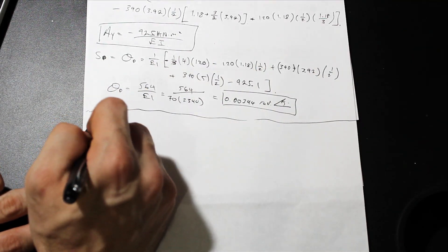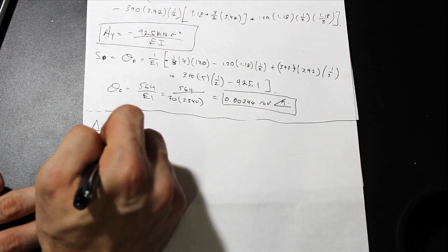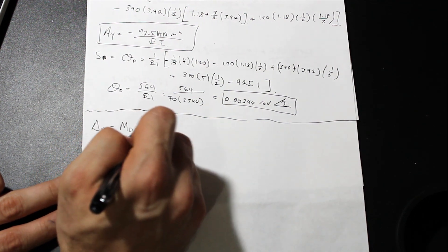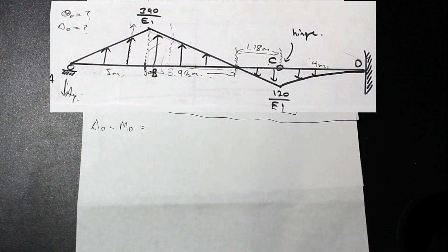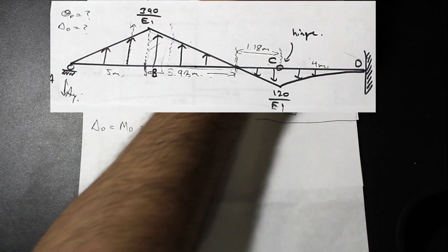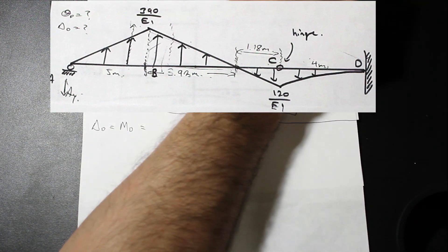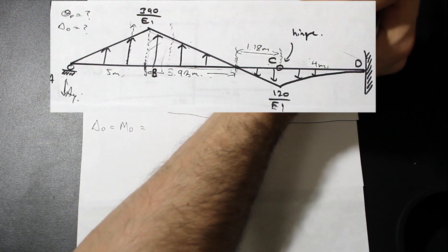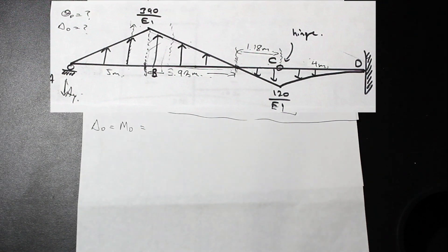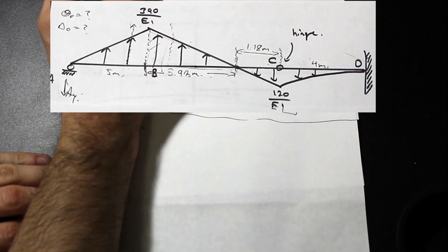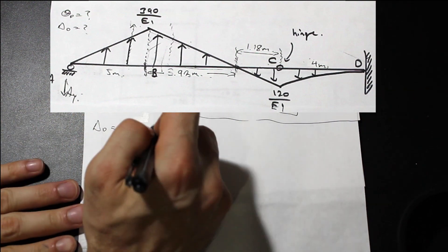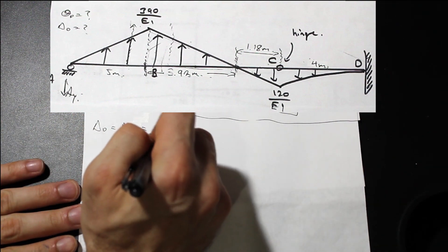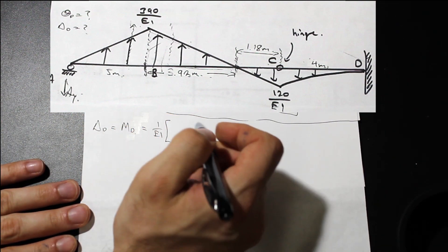Now let's solve for the deflection at D, which equals the moment at D in the conjugate beam. We do exactly the same thing we just did, except now we multiply each area by the distance to its centroid.